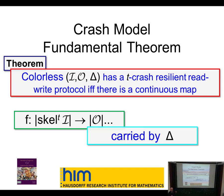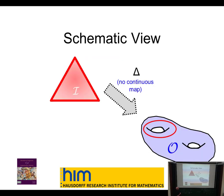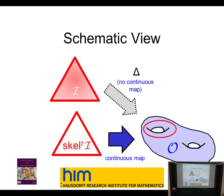Once you've dropped down to the t-skeleton you can't rip any holes or do any non-continuous operations, but there is a sort of non-continuity when you drop from the input complex down to the skeleton. The intuition is: suppose I start with an input complex that doesn't have a continuous map to the output complex because the boundary wraps around a hole — that's an obstruction. So what I can do is drop down to the t-skeleton algorithmically, and then there's a map.